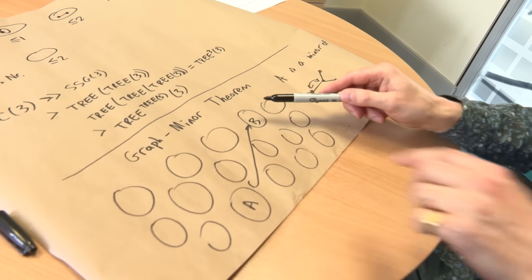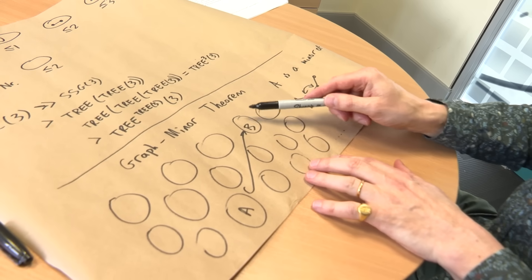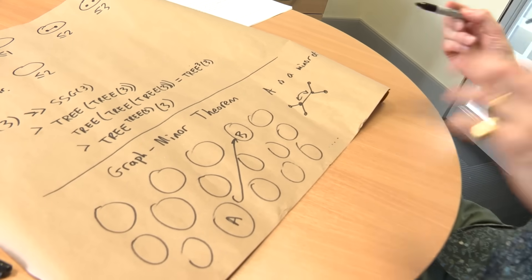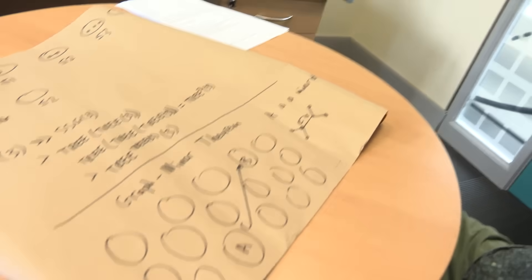And what it means for one graph to be a minor of another is that from B you can get A back, firstly by deleting some edges, deleting some nodes, but also by contracting edges. So if we've got some sort of structure like this, then we can just sort of squeeze that edge away and merge these two vertices. Whenever you've got an infinite collection of finite graphs, you can always find a pair such that one is a minor of the other. Meaning you can find A inside by either deleting edges, deleting nodes, or doing this edge contraction.